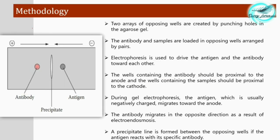In the methodology, two arrays of opposing wells are created by punching holes in the agarose gel medium. As shown in the picture, you punch two wells — one for the antibody and one for the antigen — so that you can load your sample and the anti-serum. The antibody and samples are loaded in opposite wells arranged in pairs, so the results are clear and decipherable.